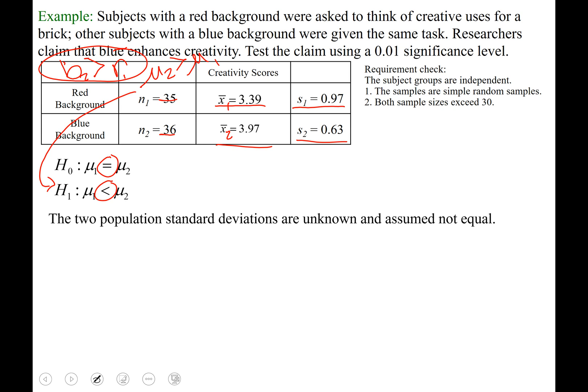Our two population standard deviations are unknown, and there's nowhere in this problem that says assume σ₁ and σ₂ are equal. They're not assumed equal, so we're not gonna pool the sample. Let's do this together. Take out your calculator, turn it on, clear your screen. Everybody hit STAT, arrow over to TESTS.